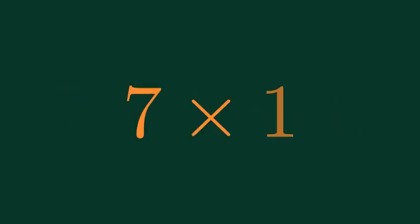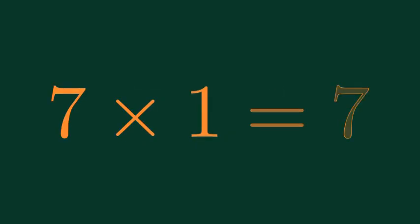What is 7 times 1? 7 times 1 is equal to 7.